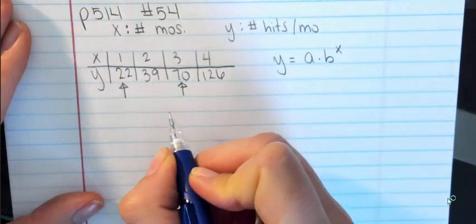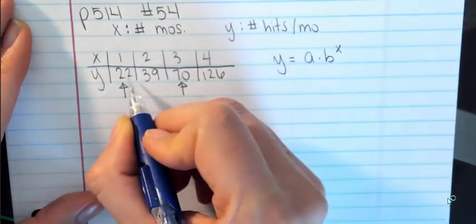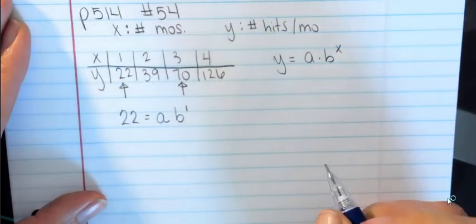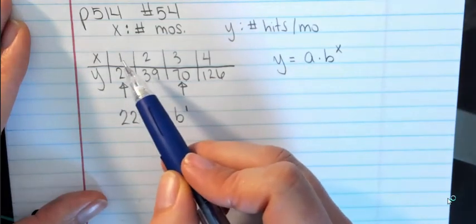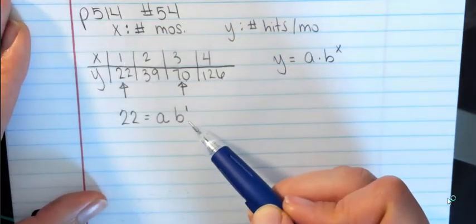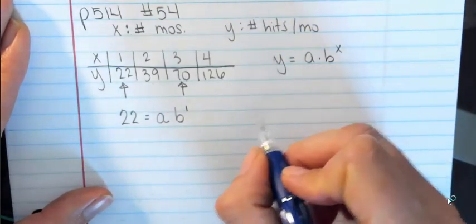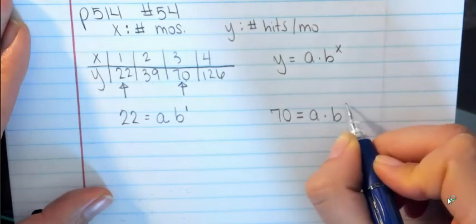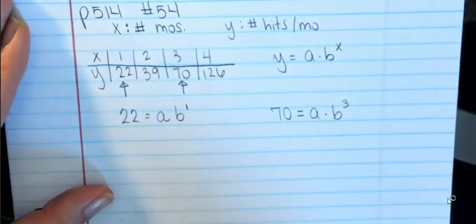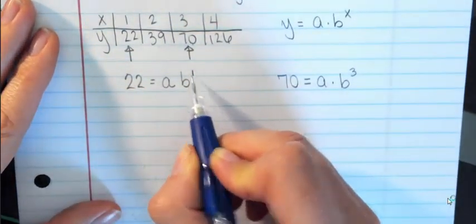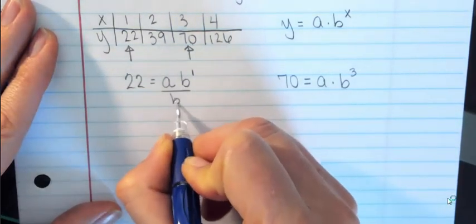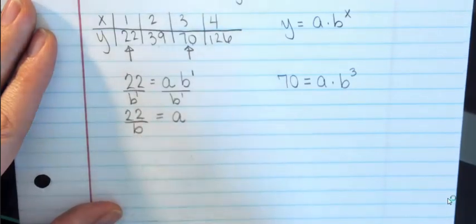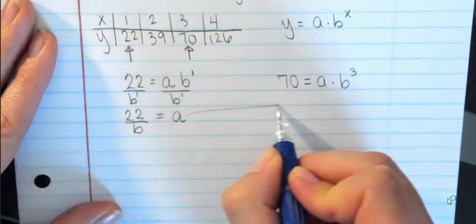Step one: set up two equations using y equals a times b to the x. My first equation: 22 equals a times b to the first. I'd always use your first piece of data — it'll be x equals 0 or x equals 1, which makes life easier. My second equation: 70 equals a times b to the third. I'm going to use the first equation, which has just b to the first power, and solve for a. So a equals 22 over b.